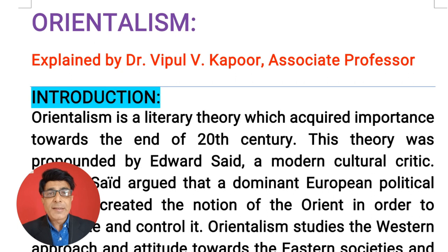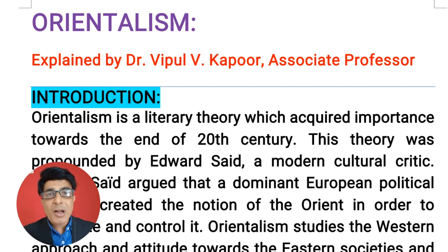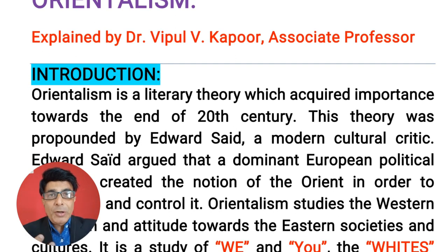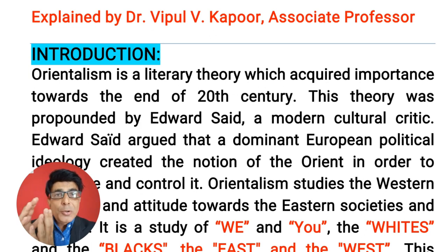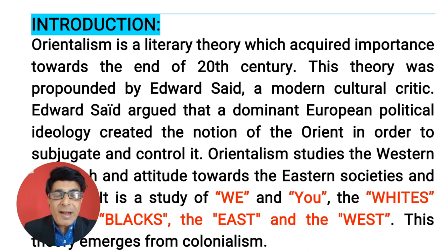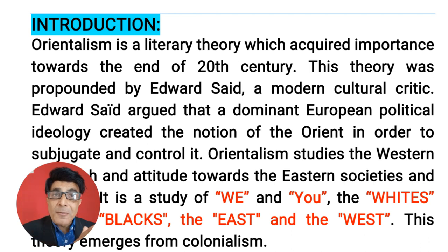Orientalism is a new literary theory which we find in English towards the end of the 20th century. One name has been closely associated with this movement is Edward Said. Friends, remember this name Edward Said. He propounded a new theory at the end of the 20th century. Edward Said, who is known as a cultural critic and theorist, he argued that European politics dominated the eastern countries of Asia. And European politicians or European writers, they considered themselves as different from the east.